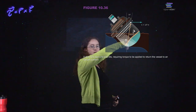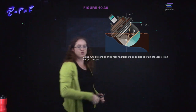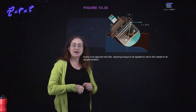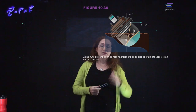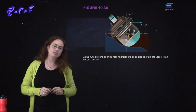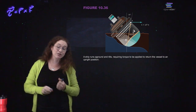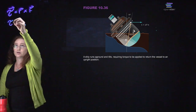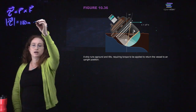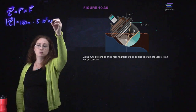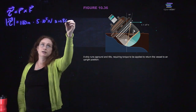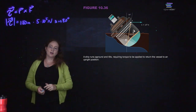R cross F is pointing towards me. This says the angle is 10 degrees relative to the y-axis, so the moment arm and the force are at an 80 degree angle relative to each other. The magnitude of the torque produced is 100 meters times 5 times 10⁵ newtons times sine of 80 degrees — that's the torque.